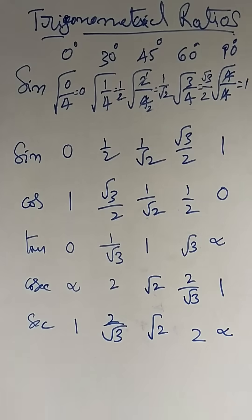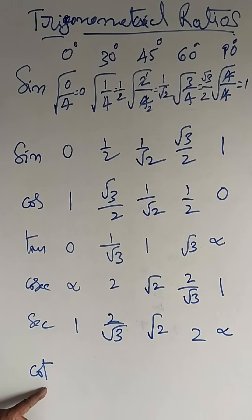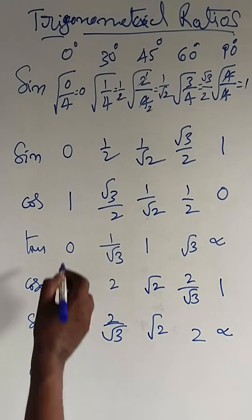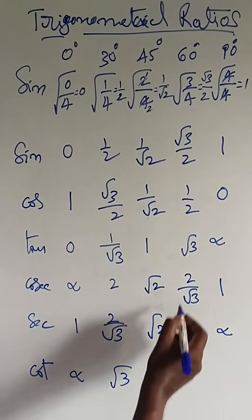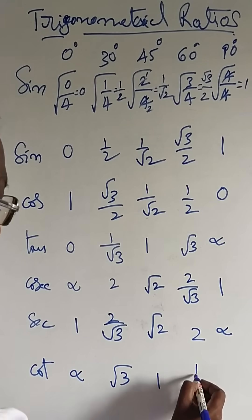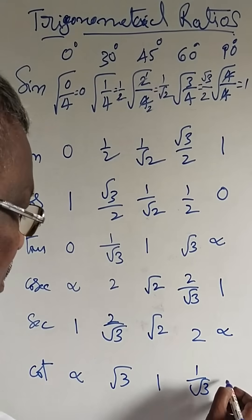Next, we know very well that tan theta into cot theta is equal to 1, that means cot theta is equal to 1 by tan theta. So the values are: root 3, 1, 1 by root 3, and 1.